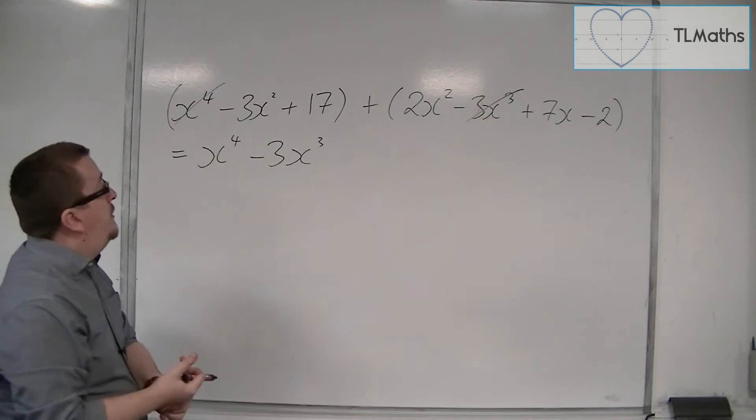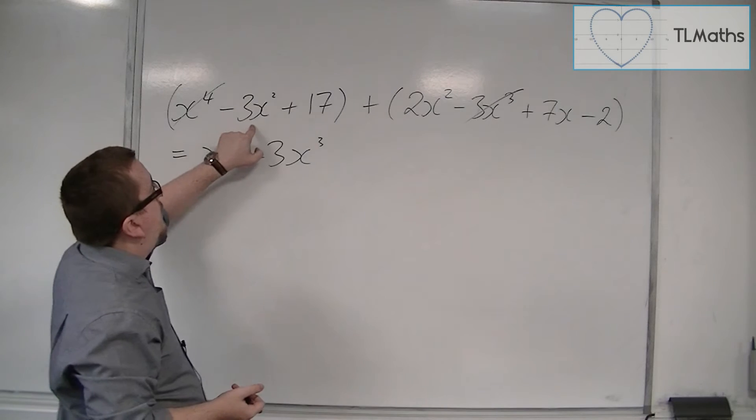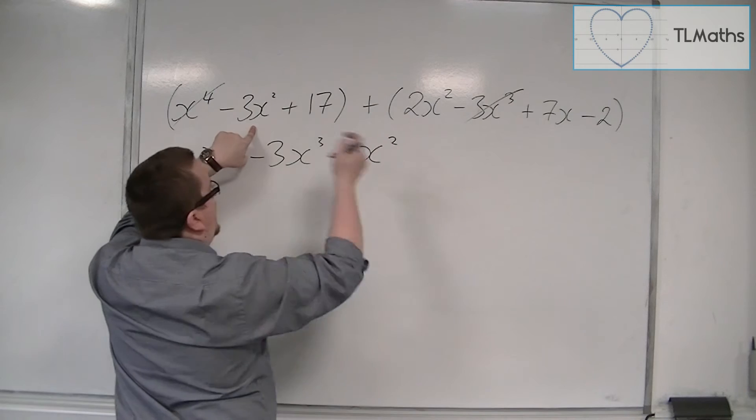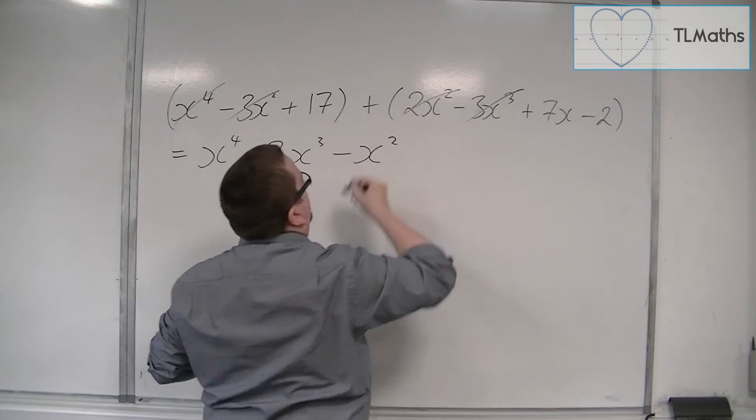Let's have a look for squareds. So we've got minus 3x squared and we've got a plus 2x squared there. So that's going to be minus x squared, minus 1x squared. So we can get rid of those two.